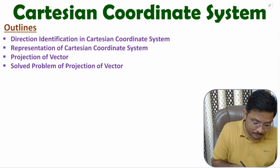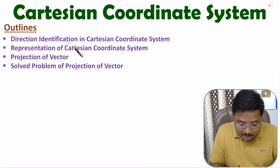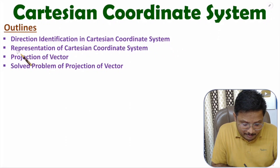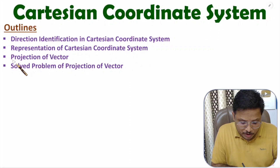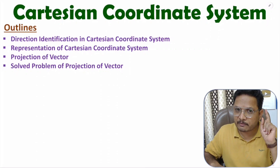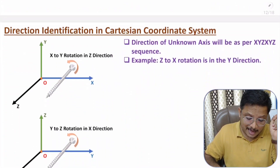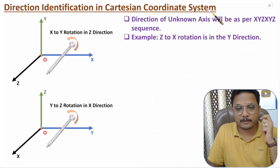In this video, first I will discuss about direction identification in Cartesian coordinate system. After that, I will discuss about representation of Cartesian coordinate system. After that, I will explain projection of vector, and at last I will solve one problem based on projection of vector. So let us begin this session with the first agenda: direction identification in Cartesian coordinate system.